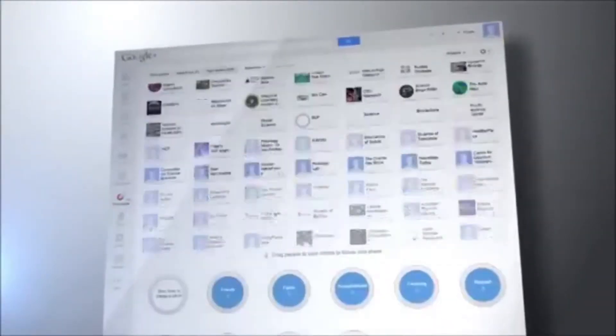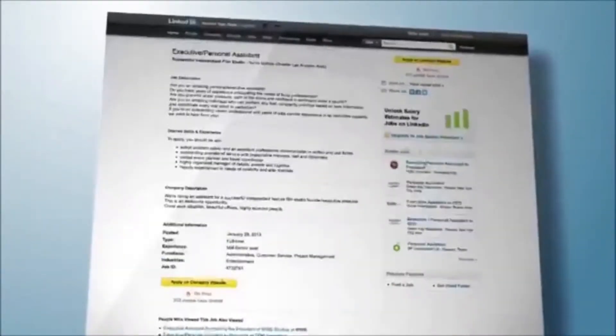Search engines use several complicated algorithms to figure out which pages they will display in the results of a search. These algorithms recognize different ranking factors when they deliver results to someone searching for something on the web.